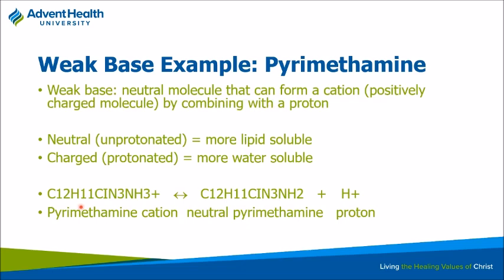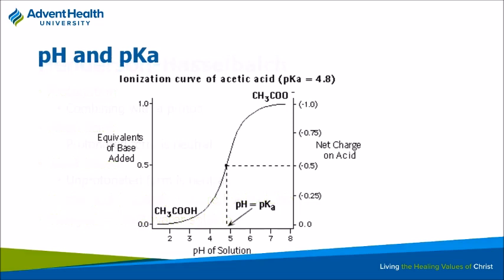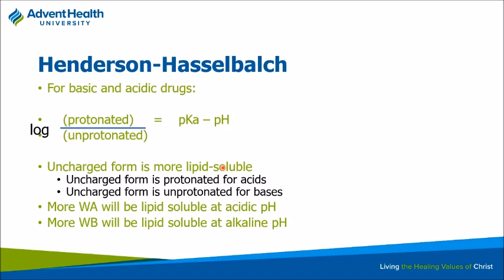On the flip side, if you have something like pyrimethamine — a weak base — it will pick up a proton in an acidic solution and become positively charged, so it's generally not absorbed well. You want it in the uncharged state where it hasn't picked up that proton. The Henderson-Hasselbalch equation tells you the ratio between protonated and non-protonated. When the pH of a solution equals the pKa of that substance, the ratio is 50-50.